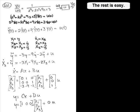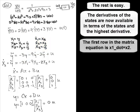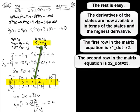The rest is easy. The derivatives of the states are now available in terms of the states and the highest derivative. The first row in the matrix equation is X1 dot equals X2.